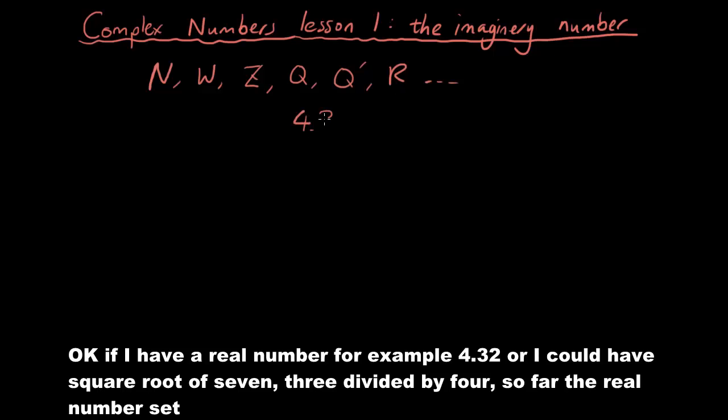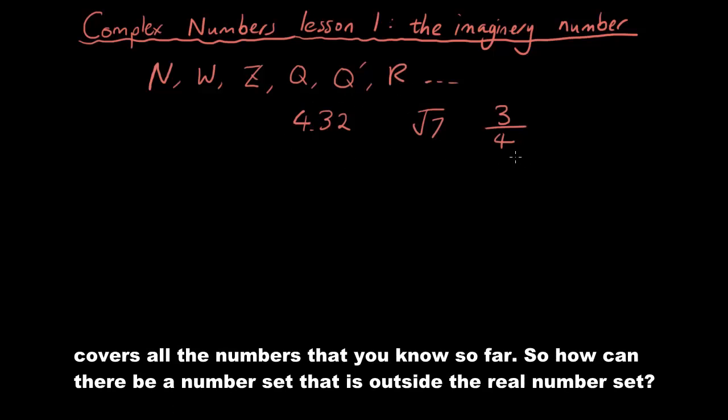4.32 or I could have square root of 7, or 3 divided by 4. So far the real number set covers all the numbers that you know so far. So how can there be a number set that is outside the real number set?